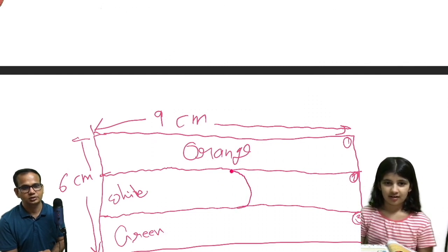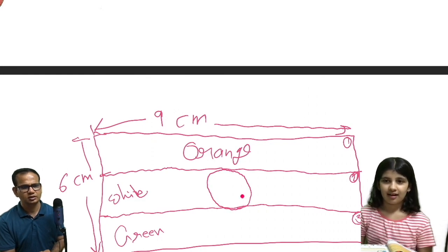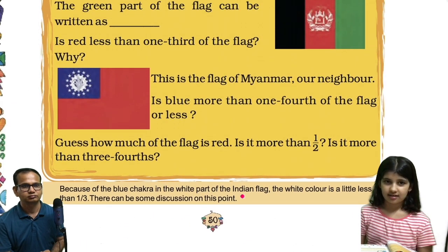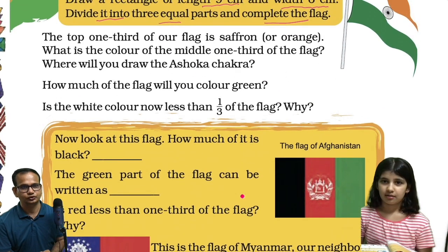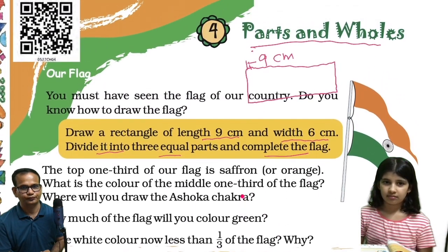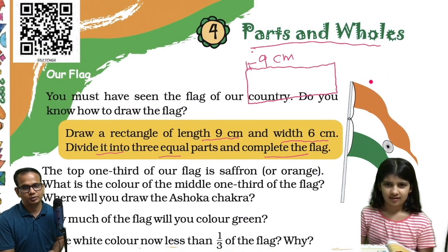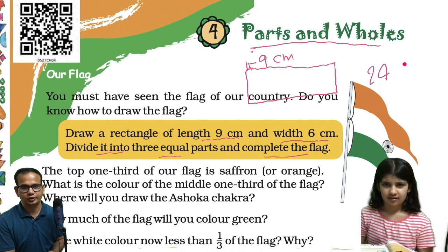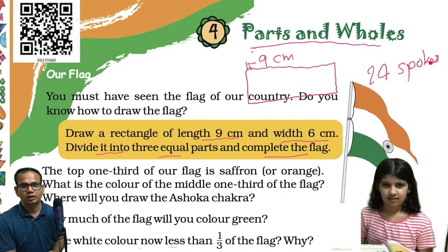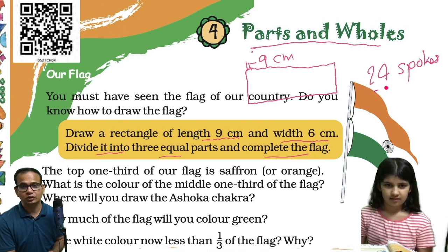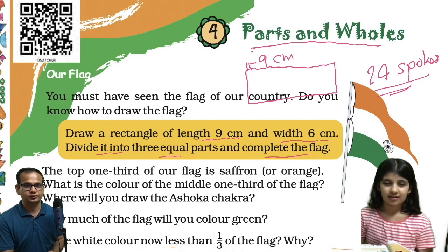How many spokes are there inside the Ashoka Chakra? — 20. Are you sure? I don't think so. Total spokes are 24. It is not 20, it's 24. You should remember this one.